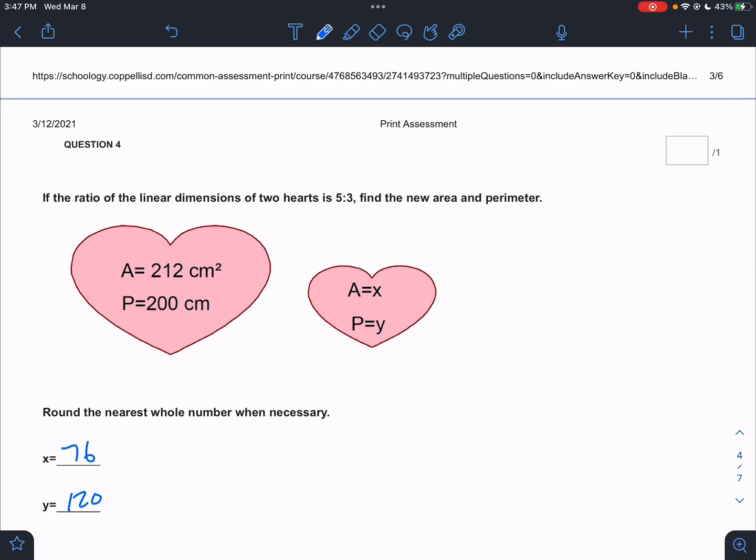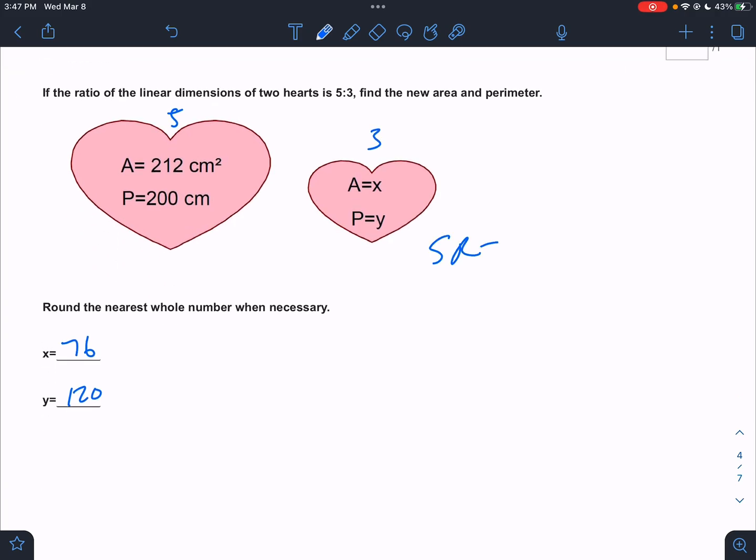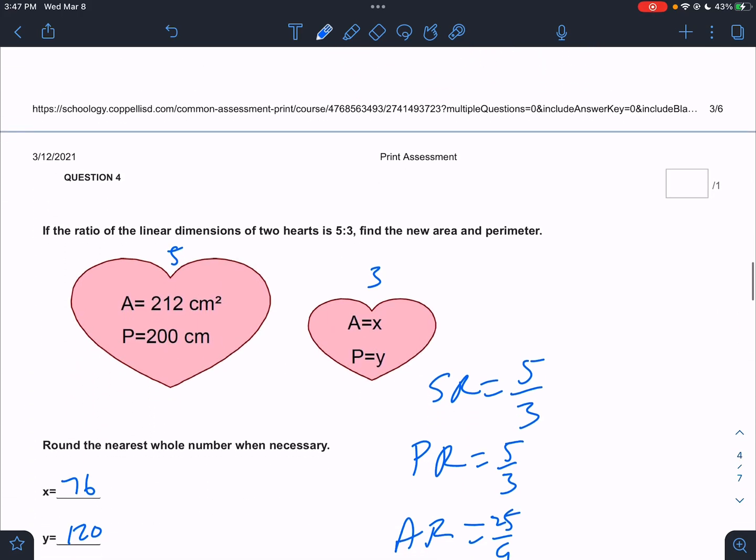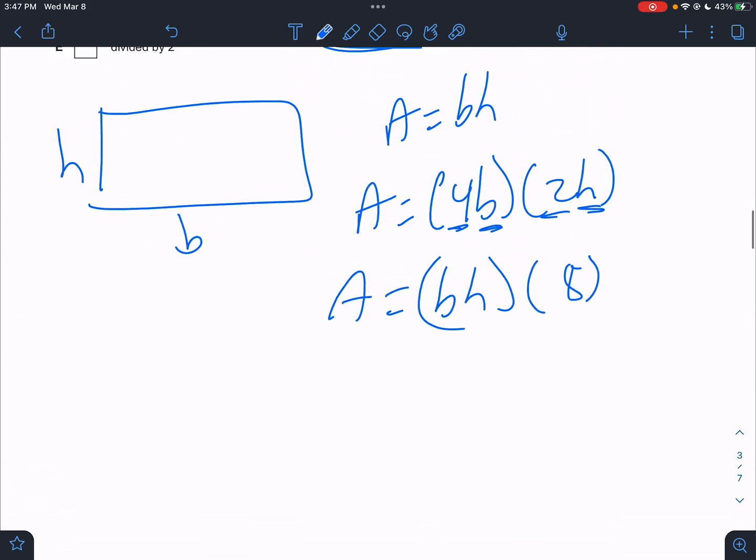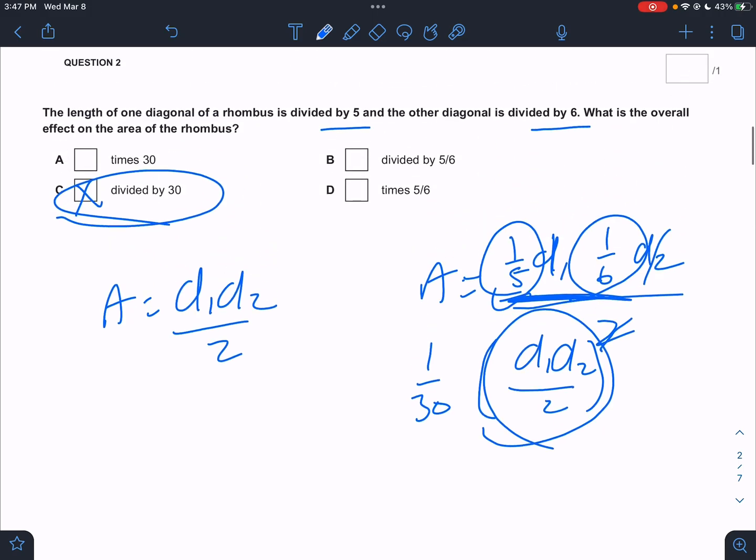If the ratio of the linear dimensions is 5 to 3, find the new area and perimeter. Well, if the similarity ratio is 5 to 3, that means the perimeter ratio is 5 to 3 and the area ratio is 25 to 9. So you've got to remember that if you're working with similar shapes, that means every dimension is multiplied by the same thing.